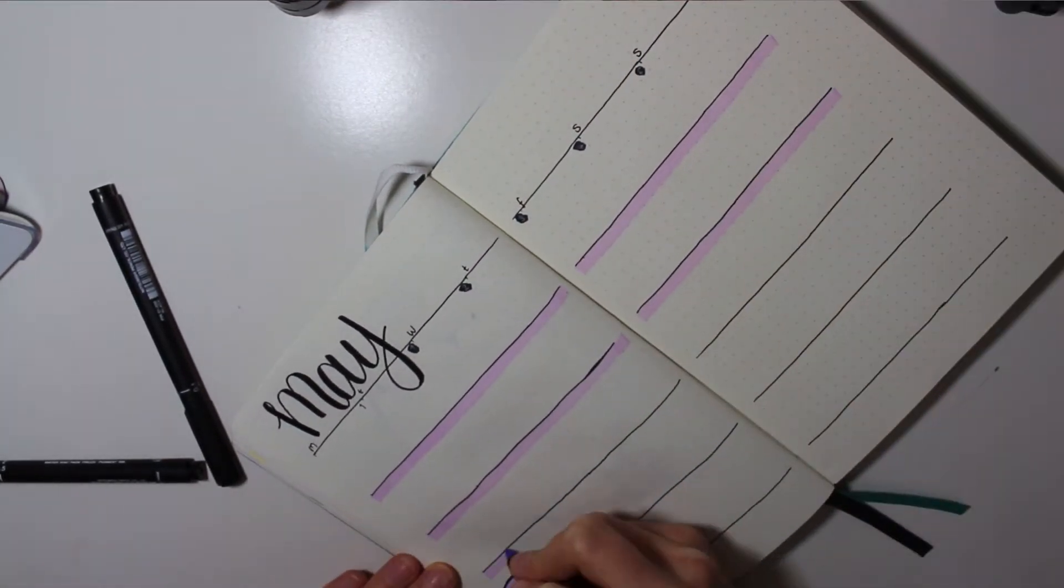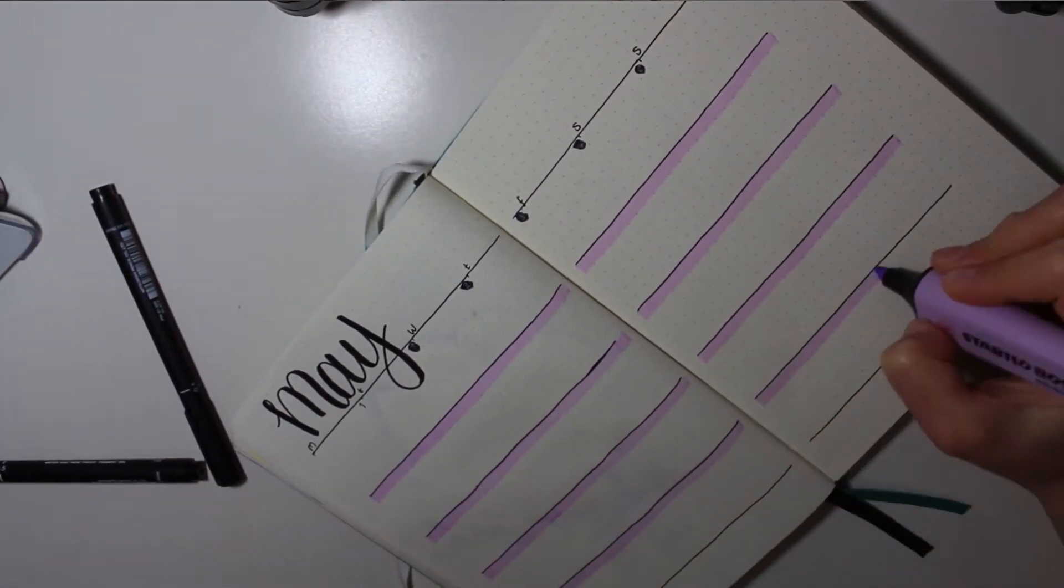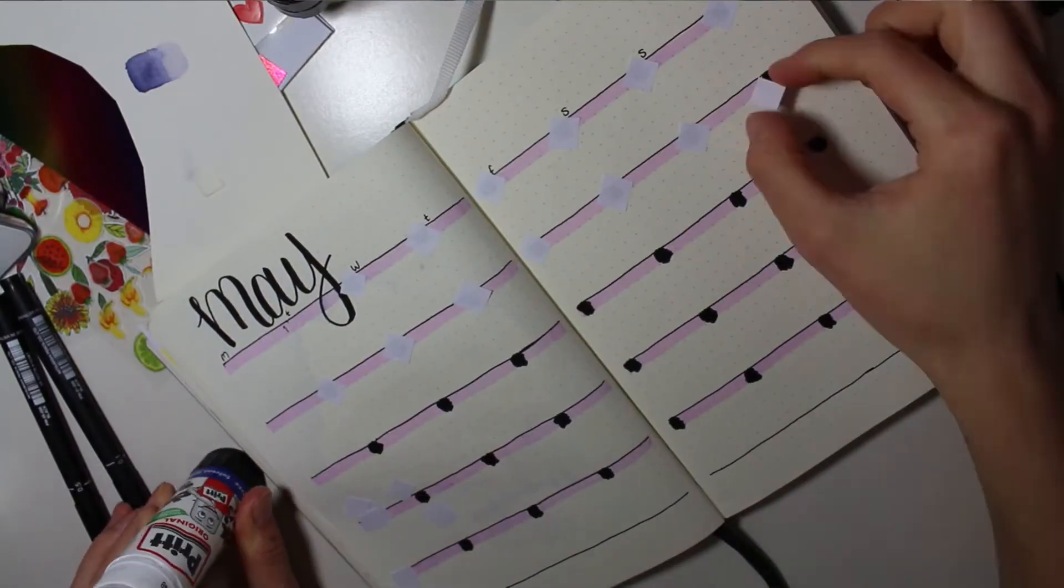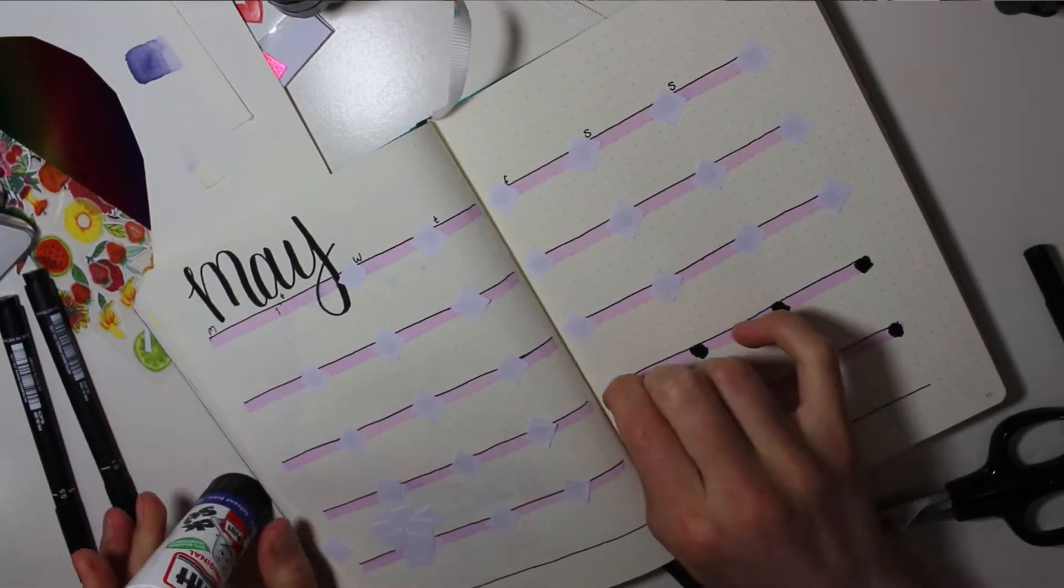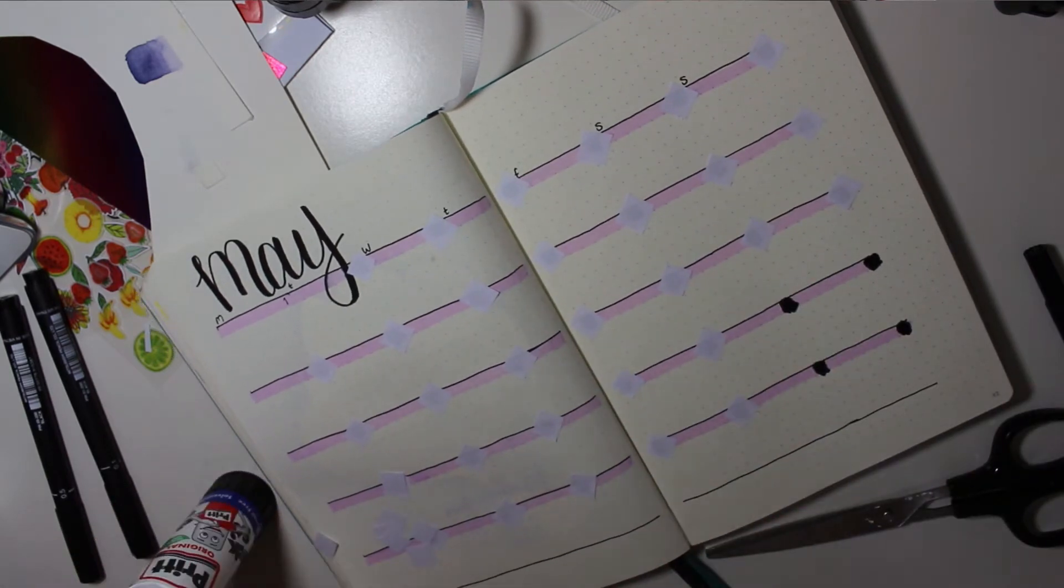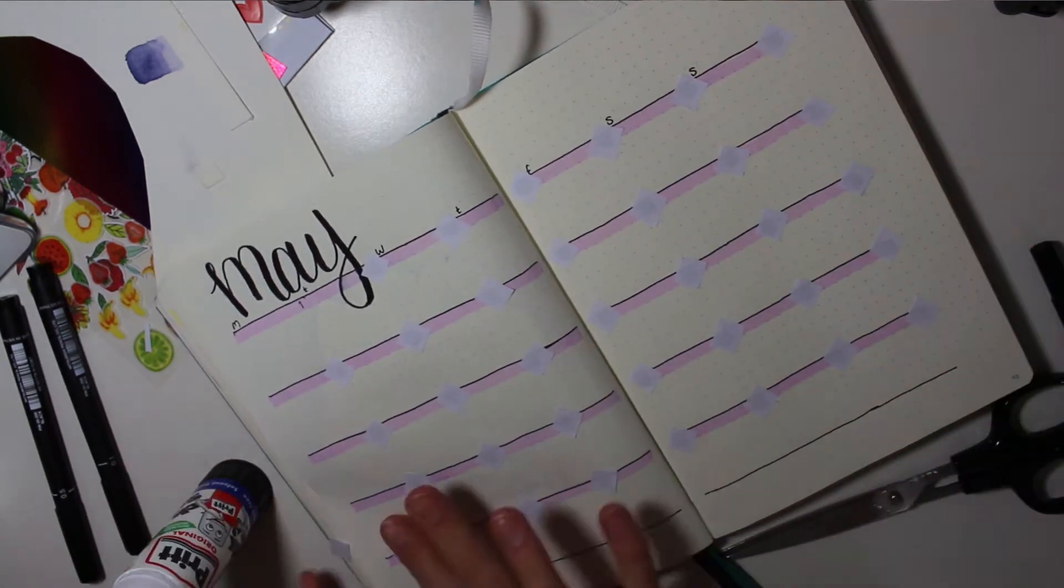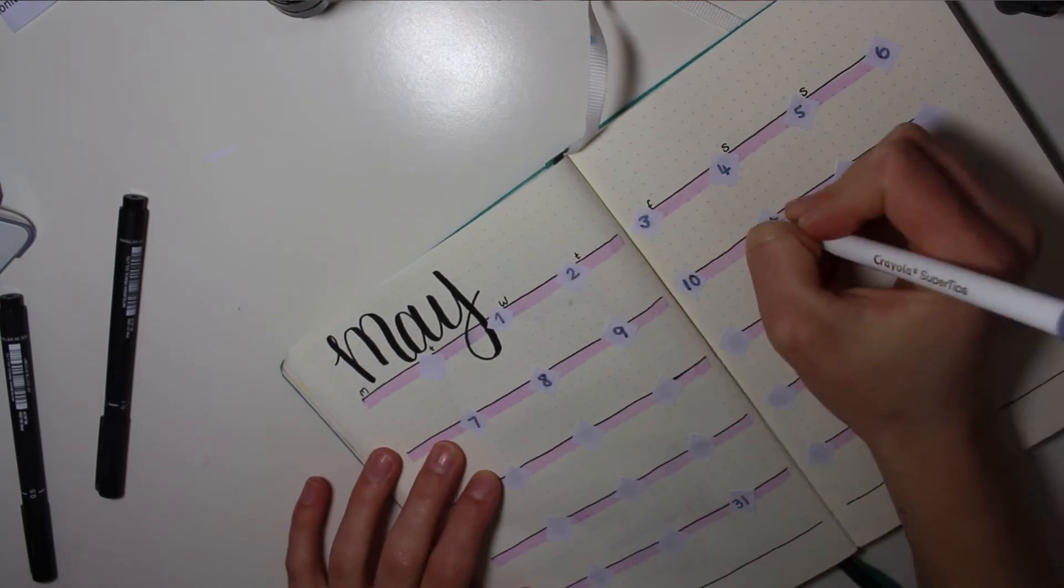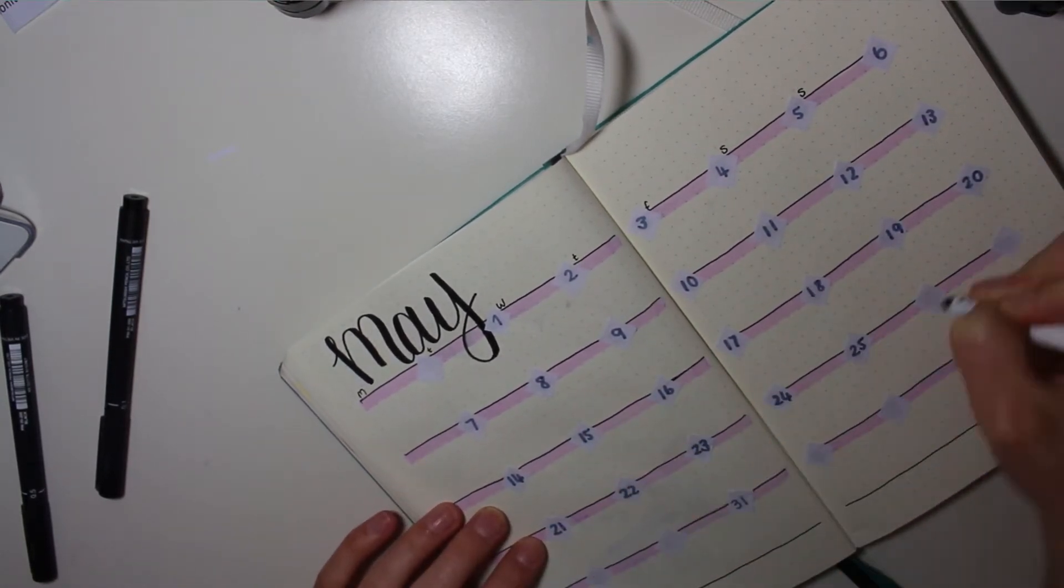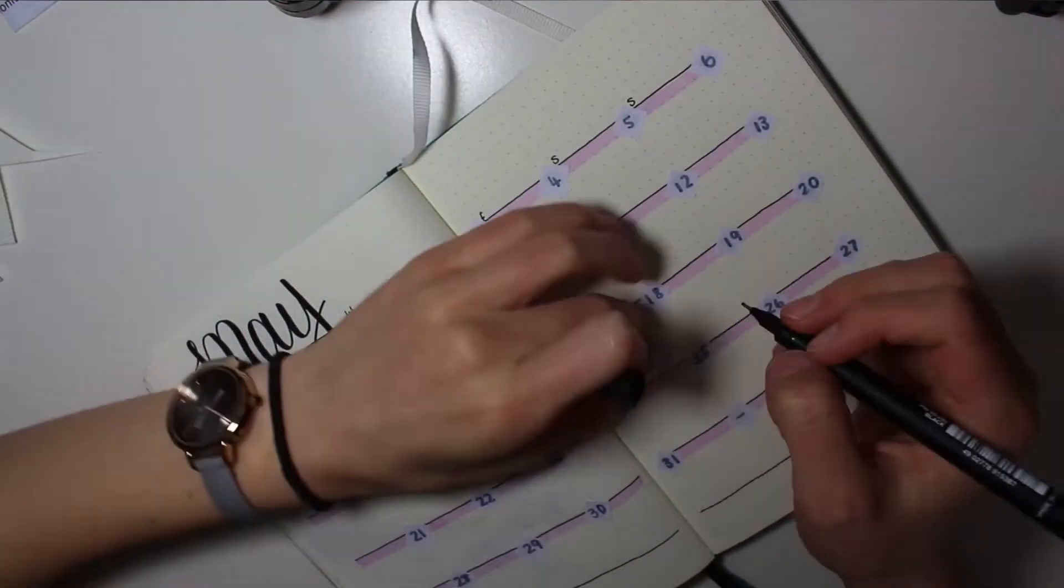I decided I actually didn't like how the days turned out so I just covered them up with a little bit of paper. I just felt like the black was a bit too harsh, so I don't really 100% like how this page turned out but it's fine. I'm a bit of a perfectionist so even when it looks okay I don't always like it.